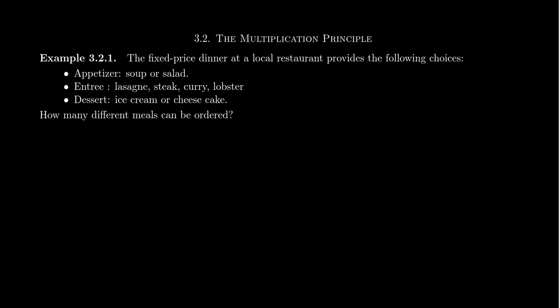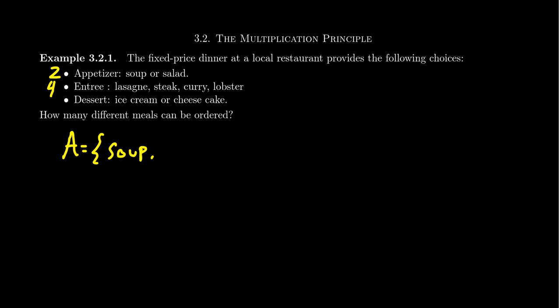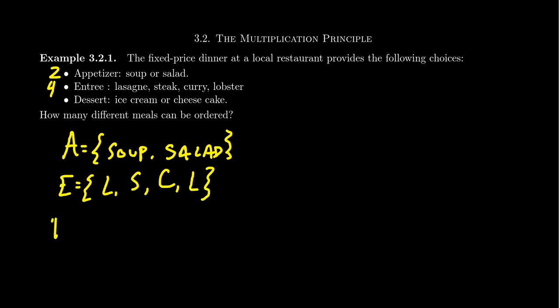This is a small enough problem that we could consider all the possibilities. You have two choices for the appetizer — soup and salad. You have four choices for the entree — lasagna, steak, curry, or lobster. And for dessert, you choose between ice cream or cheesecake. To prepare for future combinatorial problems, think of it this way: we introduce a set A for appetizer containing soup and salad, a set E for entree containing lasagna, steak, curry, and lobster, and a set D for dessert containing ice cream and cheesecake.